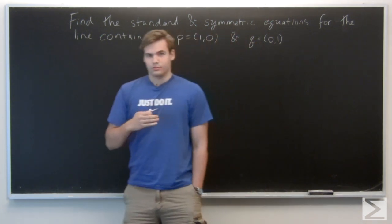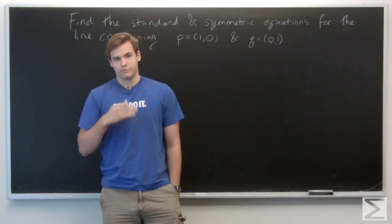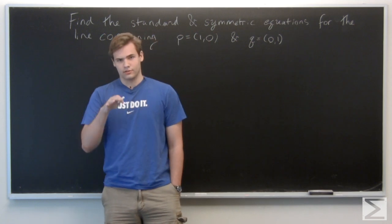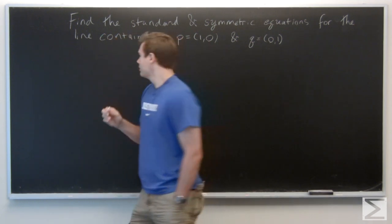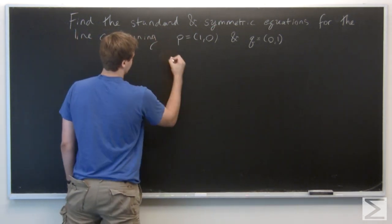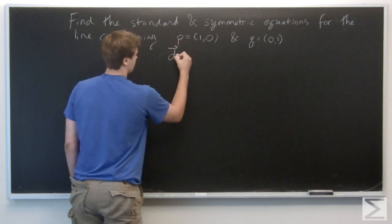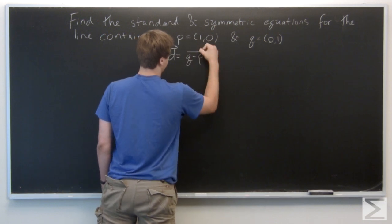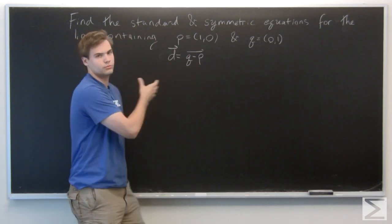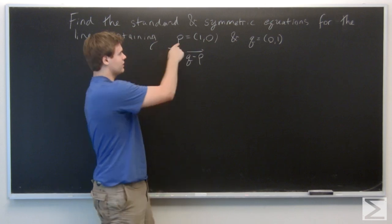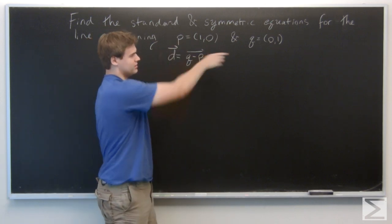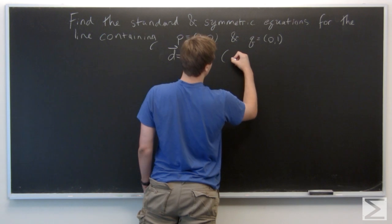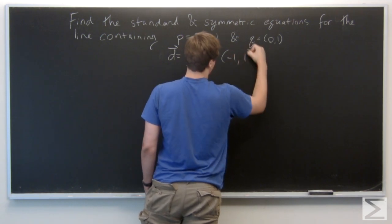We begin by finding a vector in the plane that's parallel to this line. The easiest way to do this is to use the difference of the two points, considered as vectors. The difference of these two points is the vector that starts at P and points in the direction of Q, and that's given by (-1, 1).